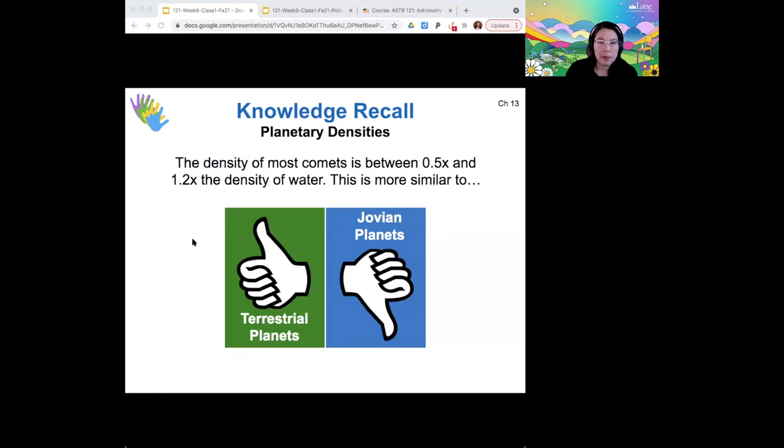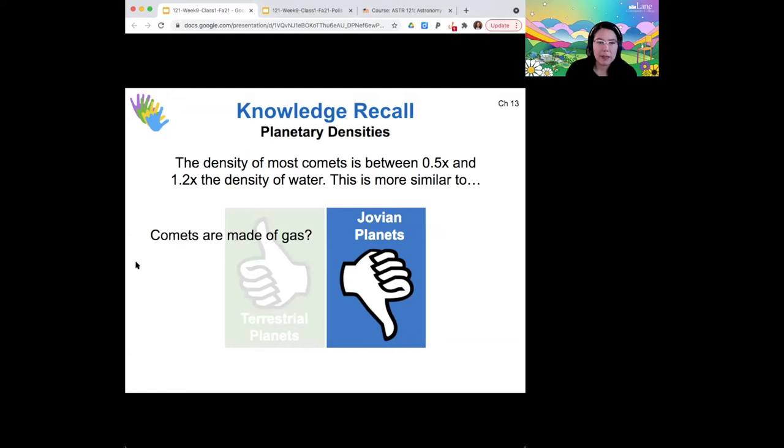So that density would be more similar to the Jovian planets, which might make you wonder, does that mean that comets are made of gas? No, it does not.